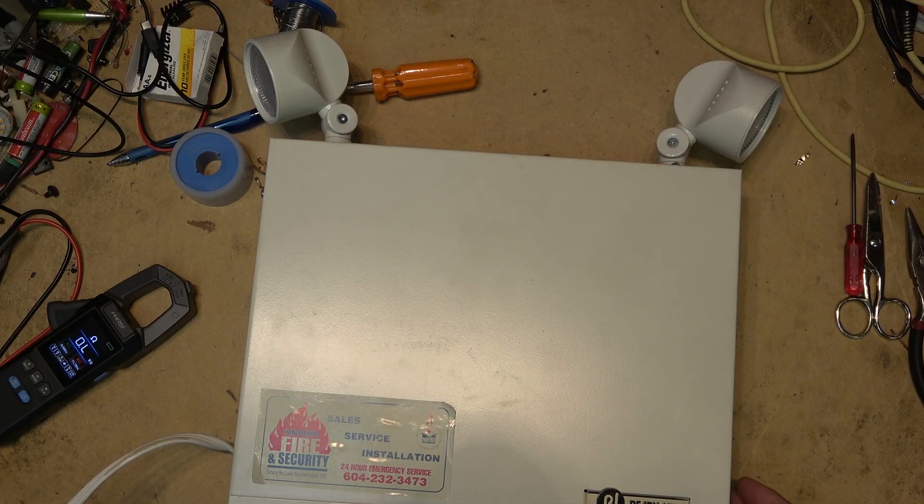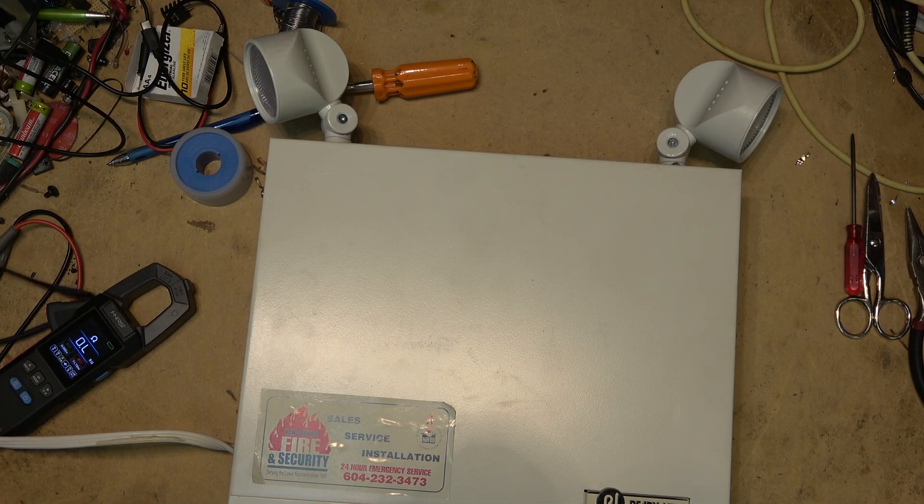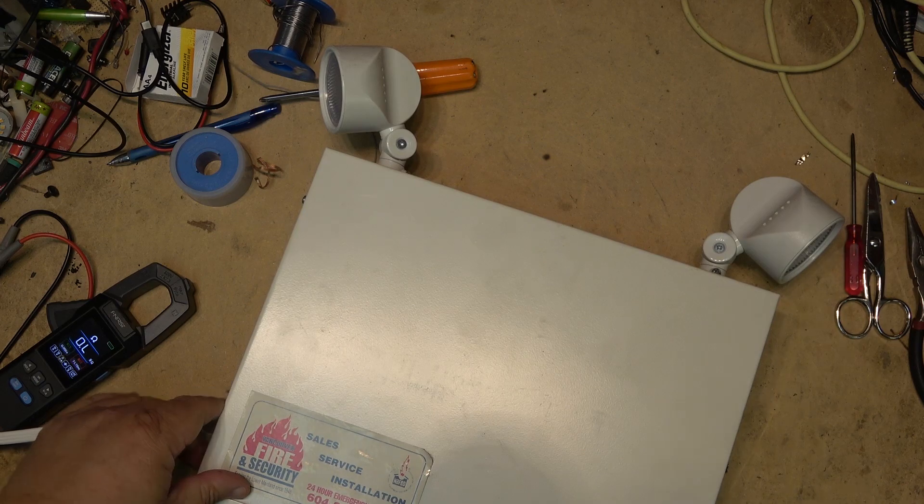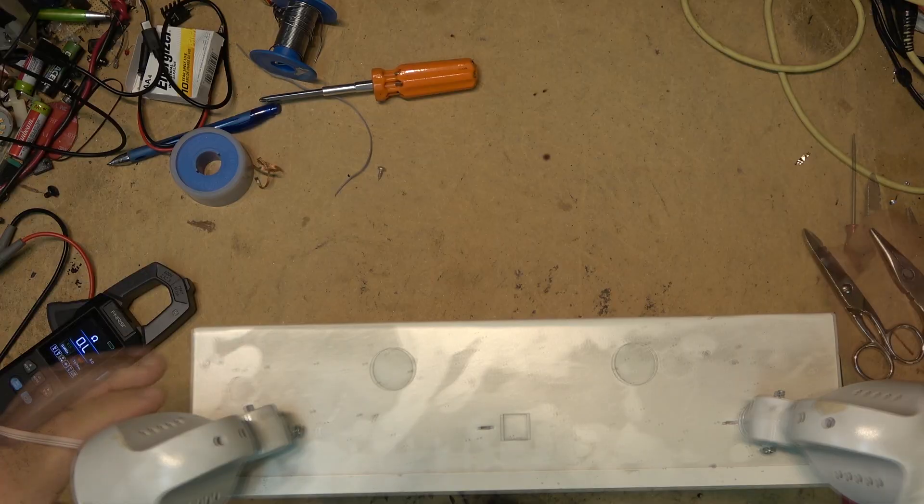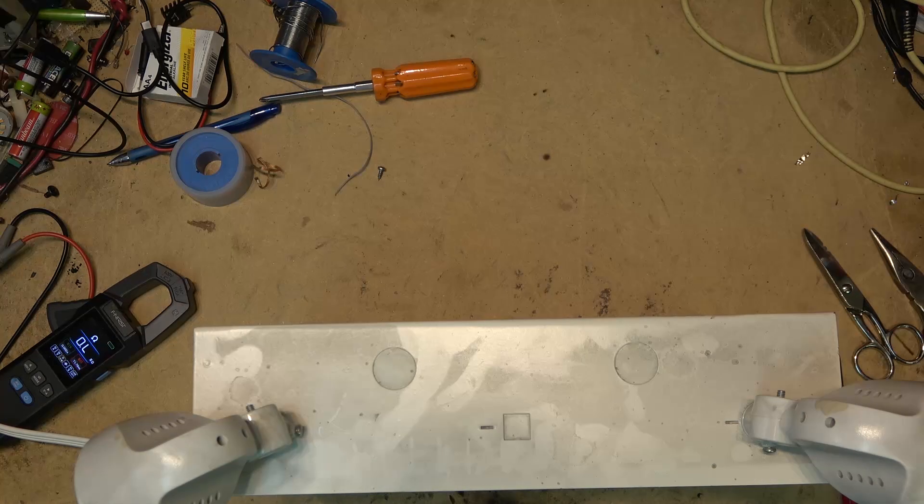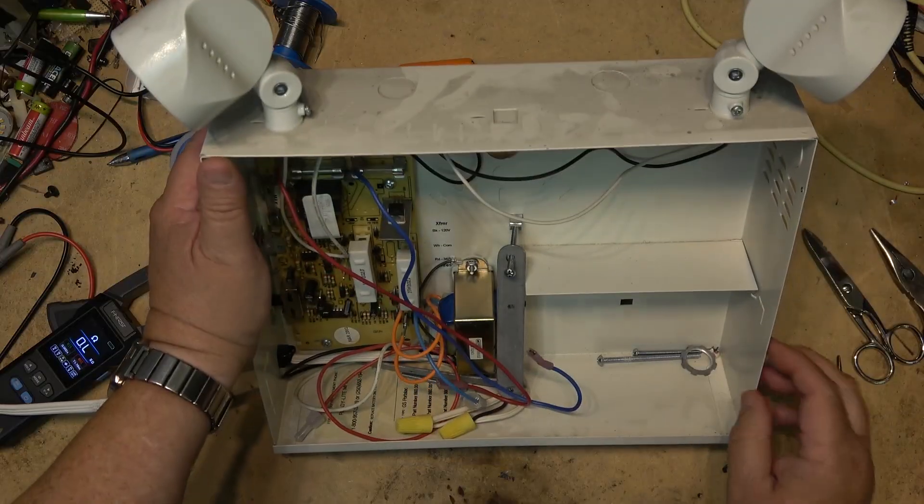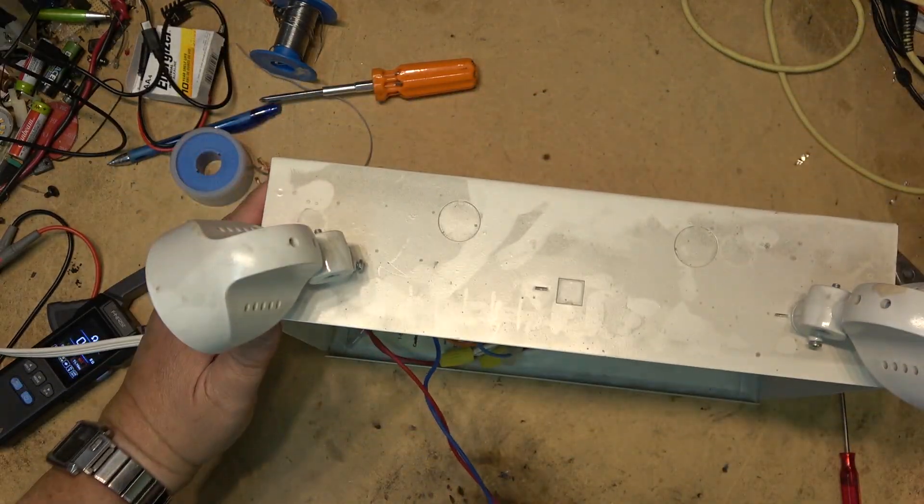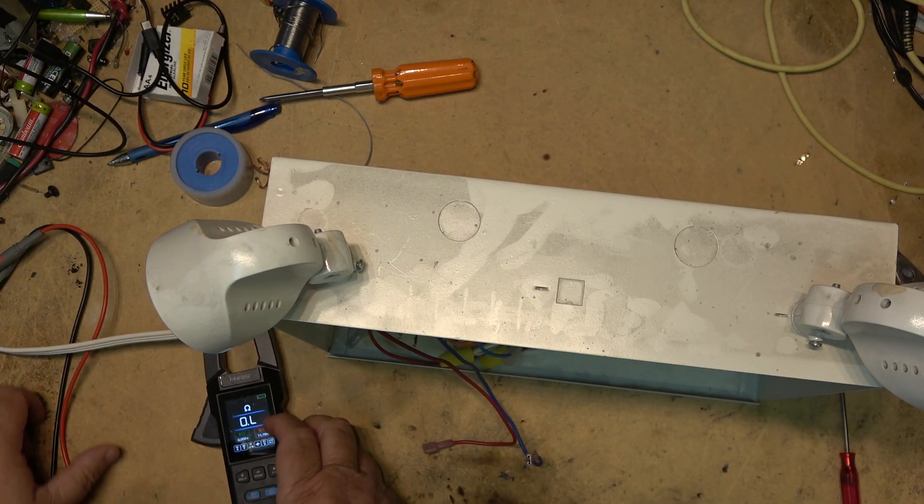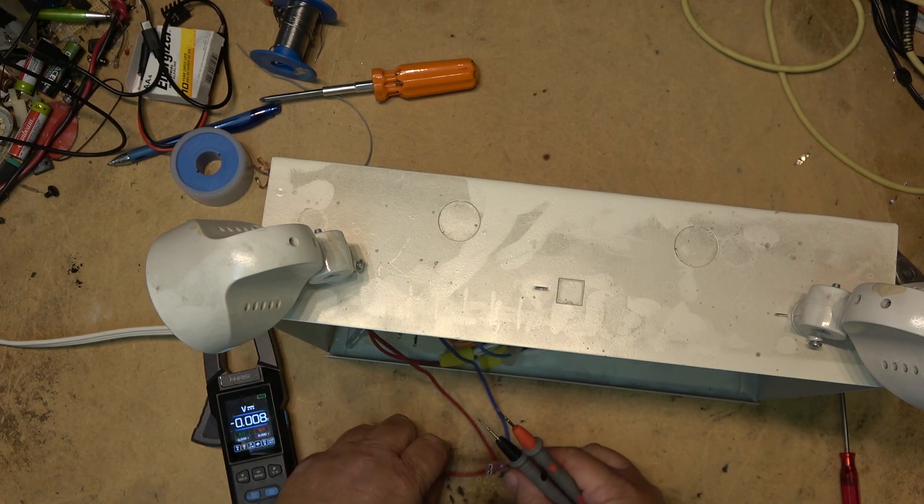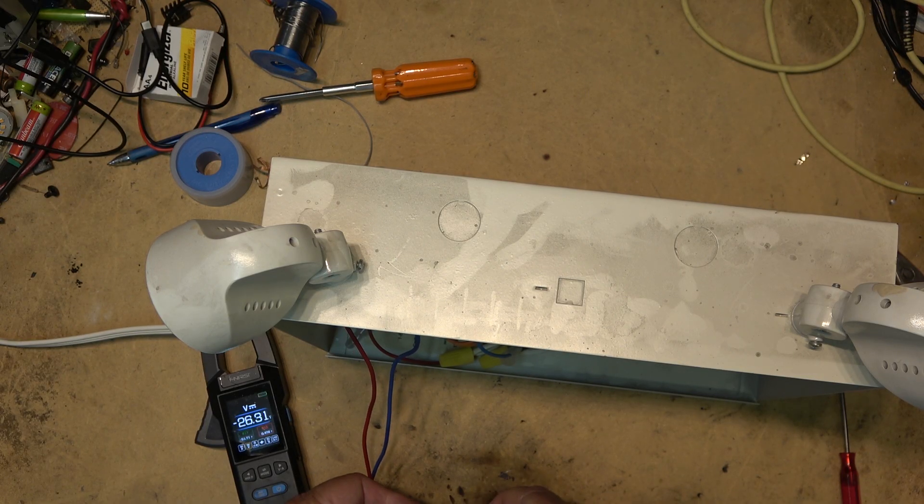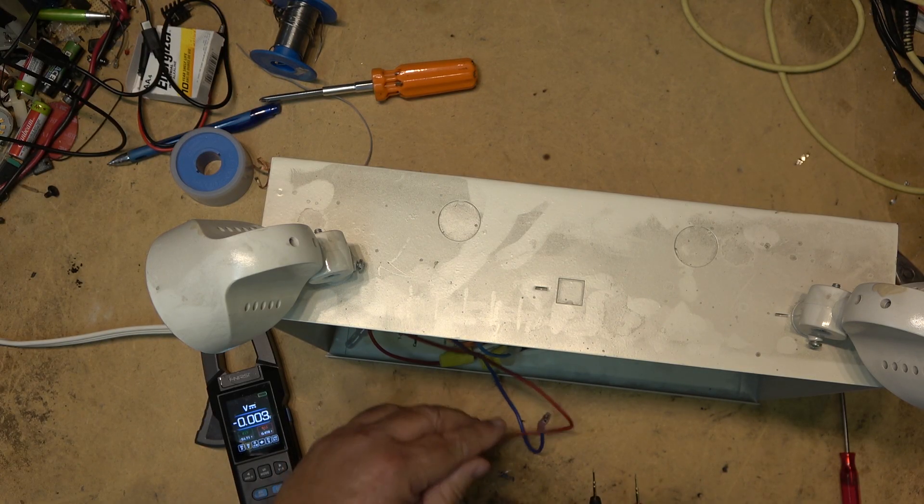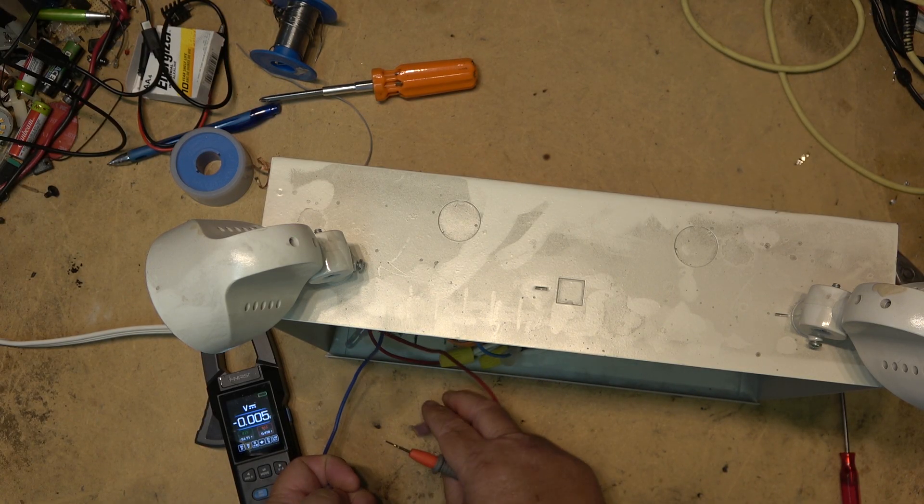Now the fellow that brought me this is an electrician. He was working in a building that this was not working in, and he took it out and brought it to me to see if he can figure out why it doesn't work. So it probably does not have a battery in it at the moment, which it doesn't. But that's okay, I have a battery that I can plug in here for testing because it's going to be 12 volts. We'll check and see if we've got power on the battery charging terminals. 19 volts, so it should charge. I'm going to grab a 12 volt battery.